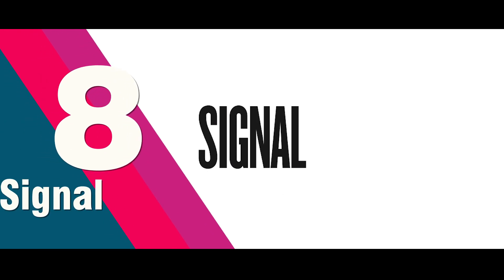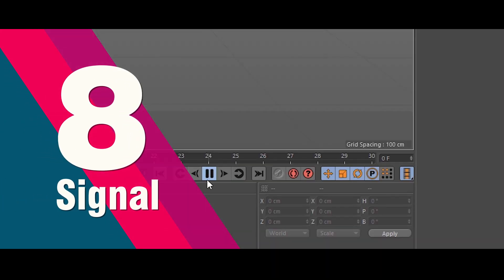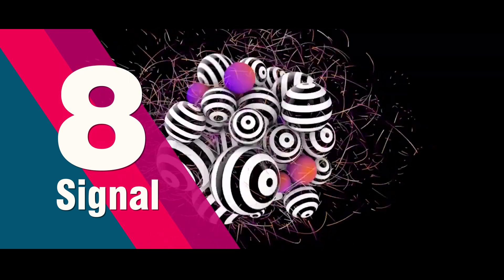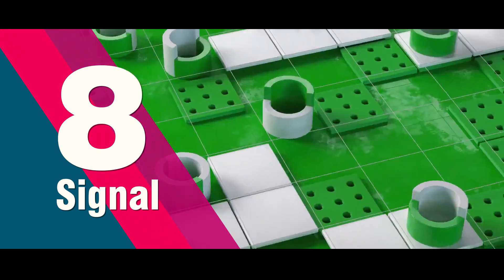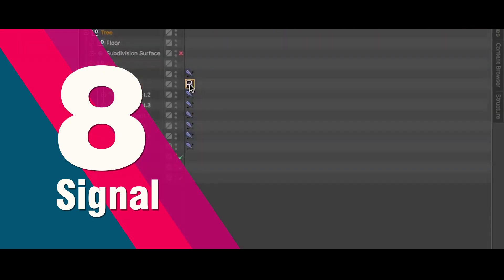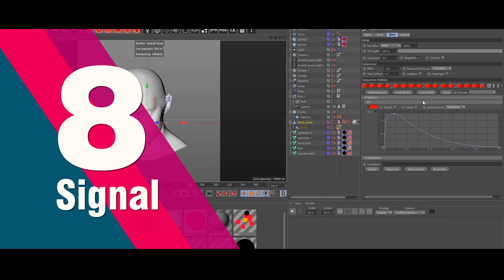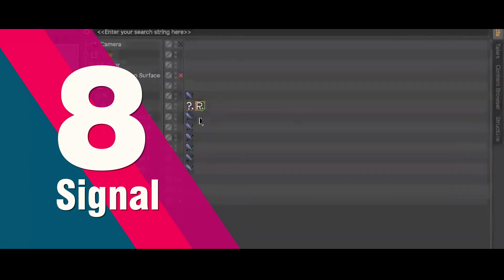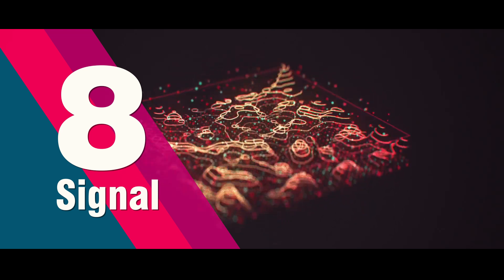Grayscale Gorilla's Signal is in 8th position. If you want to describe this plugin in one word, that is animate without keyframes. Instantly create complex animations with intricate loops, realistic noise, additive effects, and all with no keyframes. Signal's drag and drop procedural workflow makes complex animations easy and fun. Just drag any parameter onto the signal tag and start animating.